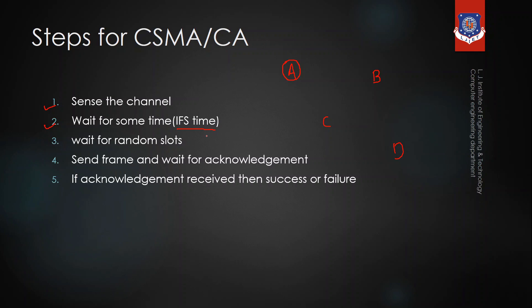The time after the IFS time is divided into n number of slots, and from those n slots device A will select a random number of slots. After selecting the random number of slots, A will wait for that time, then send the frame and wait for acknowledgement. If acknowledgement is received, the communication was successful. If no acknowledgement is received, there is a failure.